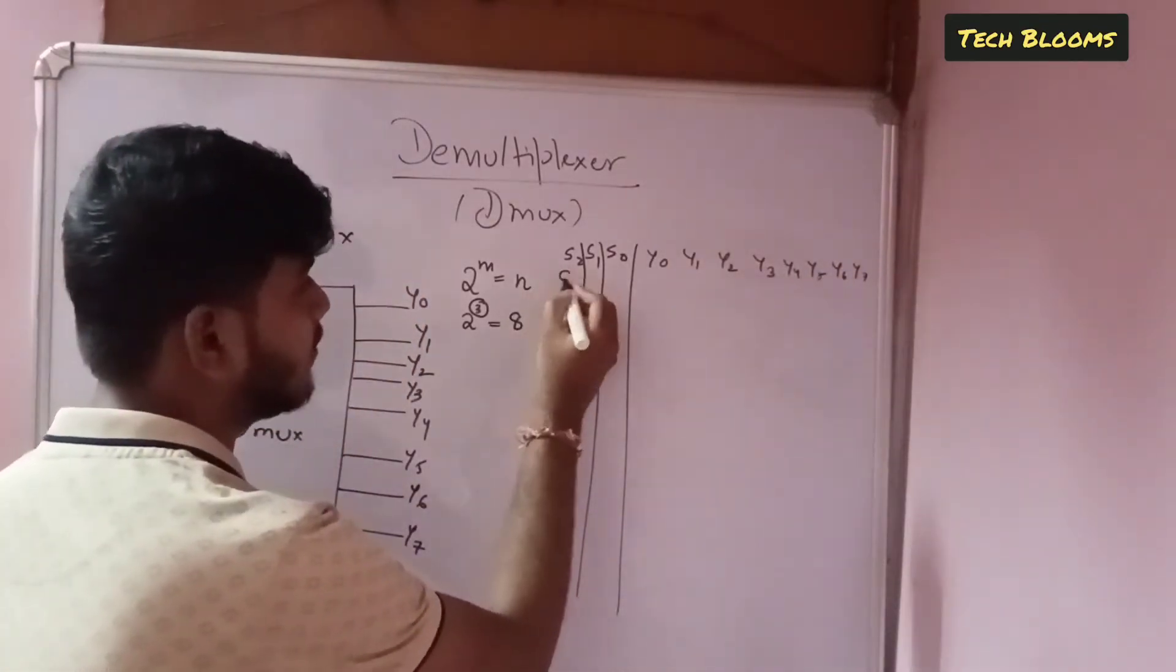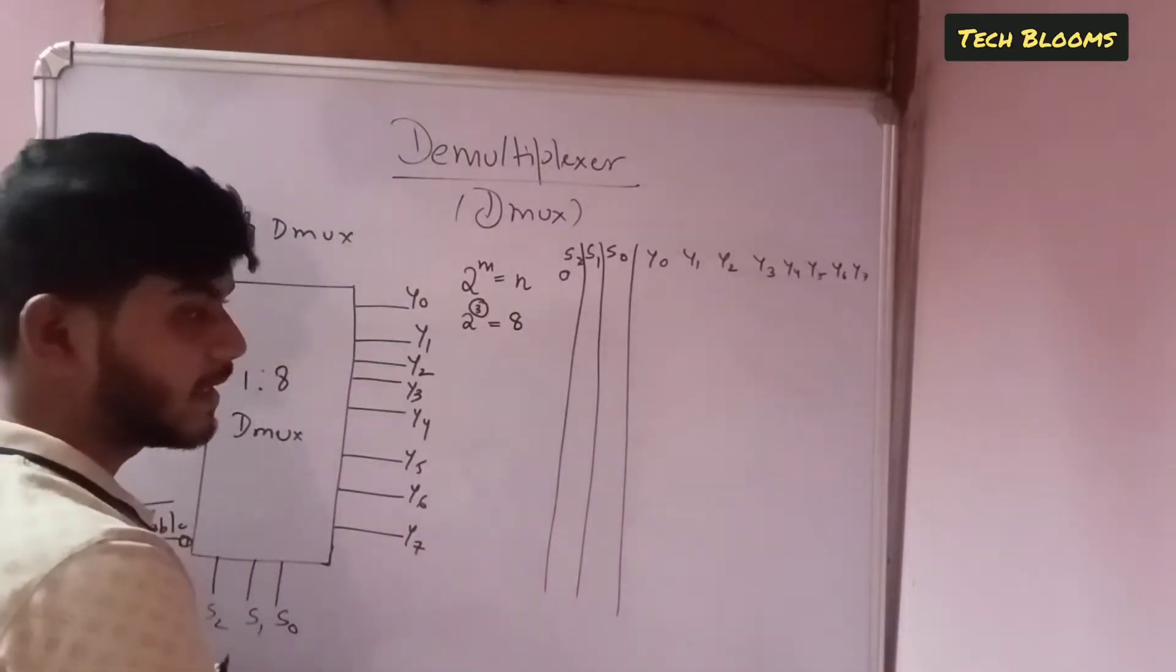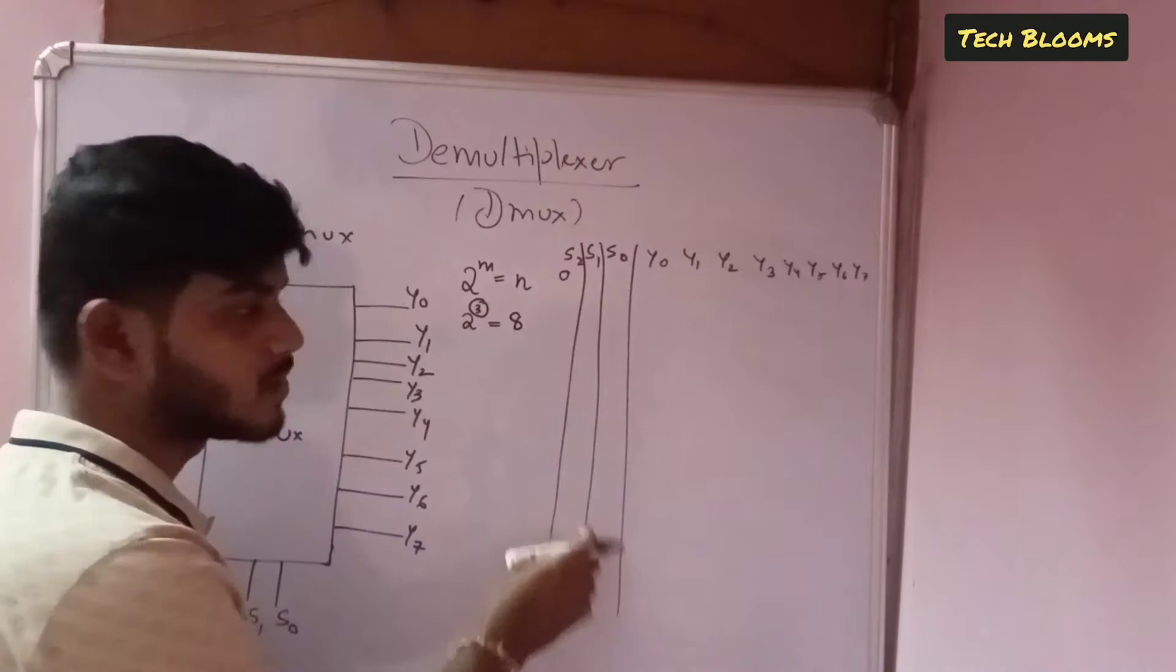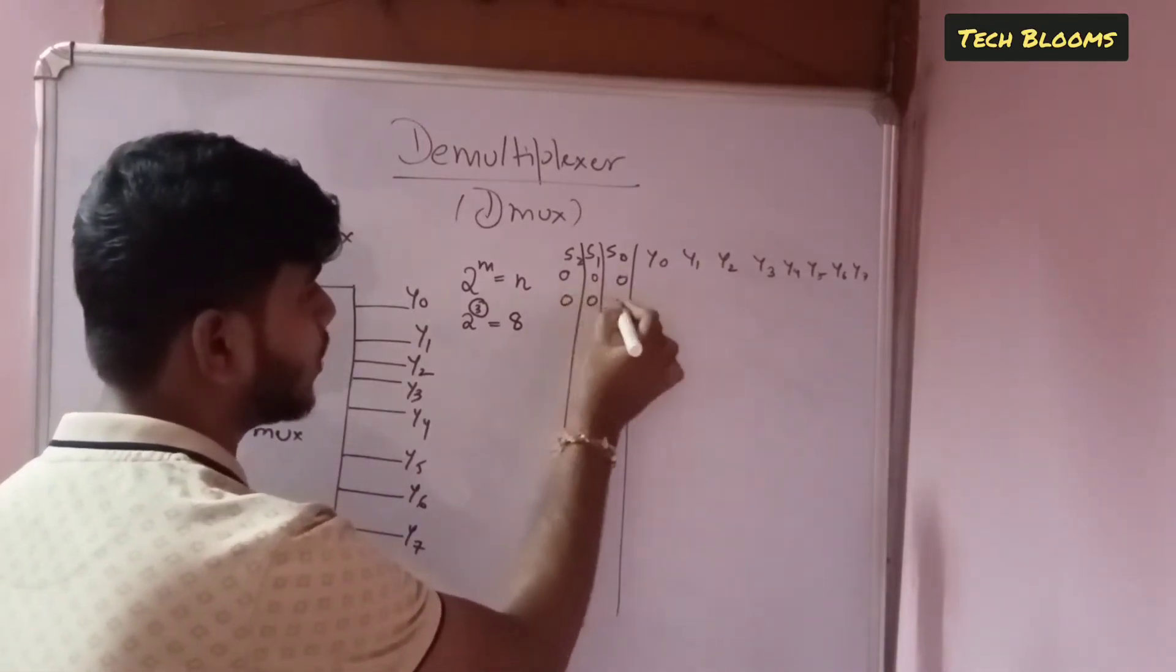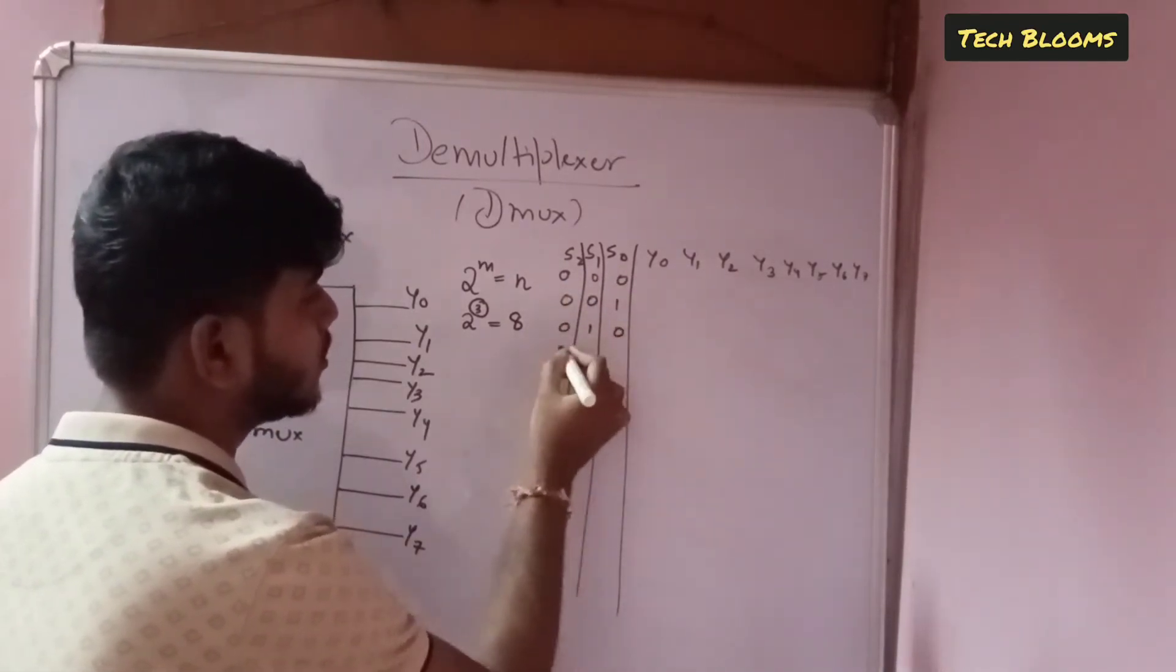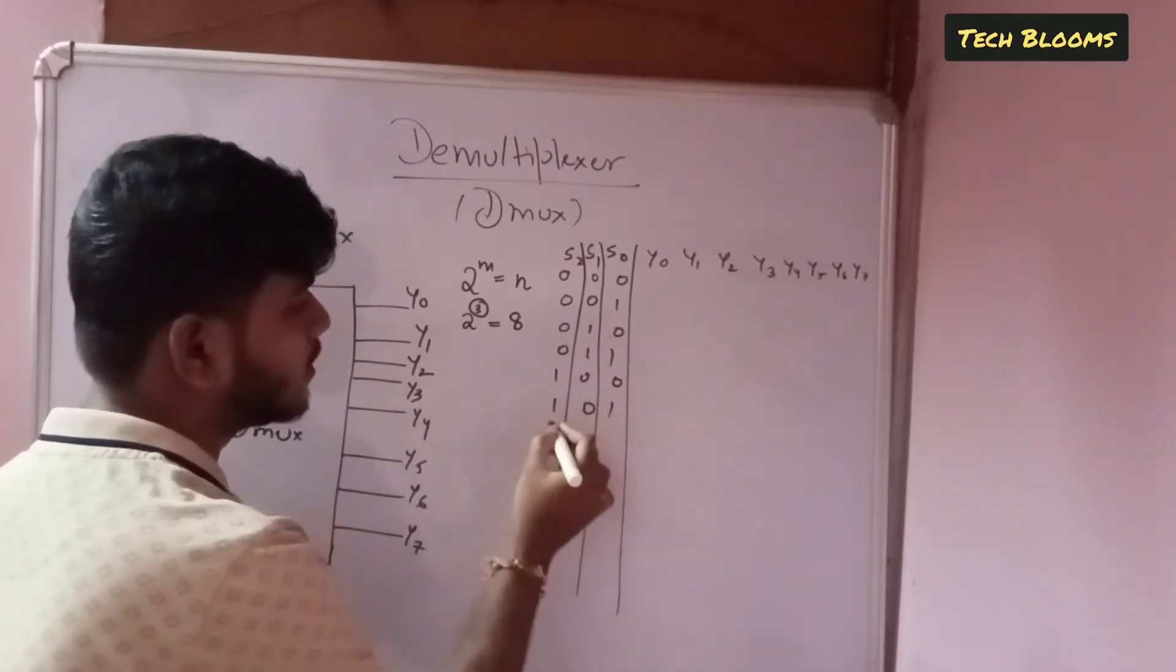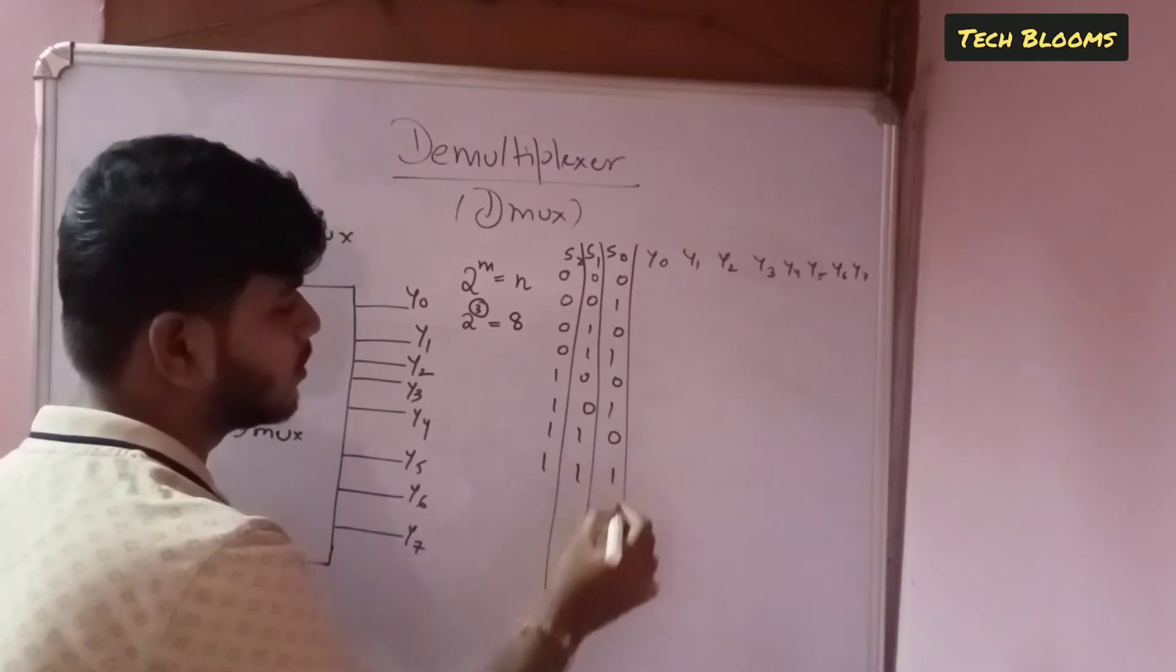Now we have since it is 3 select lines. We have how many? 2 raise to 3 that is 8 combinations. So 0 0 0, 0 0 1, 0 1 0, 0 1 1, 1 0 0, 1 0 1, 1 1 0, 1 1 1.